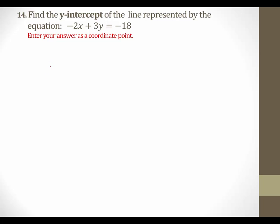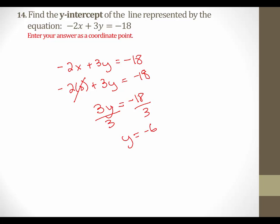In this problem we are trying to find the y-intercept of this equation. Whenever you're trying to find the y-intercept, you want to make the x-coordinate zero, so we're just going to plug in zero for x and solve for y. The x-coordinate cancels, so I'm left with 3y equals negative 18. To get y by itself, I'm going to divide by 3. Y equals negative 6. I'm going to write this as a coordinate point: since x was zero and y came to be negative 6, this would be my coordinate point.